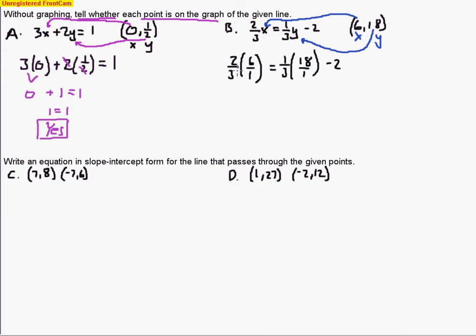We do some work there. The 3 goes into that 6, we have 2 times. Multiply across, you get 4. And then bring down that equal sign. Do the same thing here. 3 goes into 18, 6 times. Multiply across, we get 6. So 6 minus 2. Well, 6 minus 2 is 4. So sure enough, 4 does equal 4. So we get 2 yeses. Both of those points are on the line that was given to us.